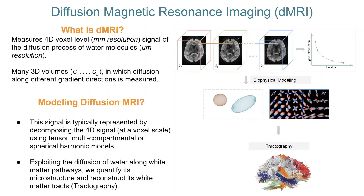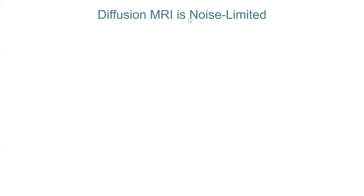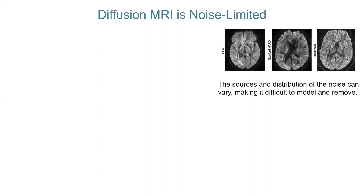Using the information derived from these models fitted to the data, one derives white matter information to reconstruct tracts, commonly known as tractography. Diffusion MRI is typically limited by noise. Noise originating from a variety of sources and types often corrupts the diffusion MR signal. One of the main sources of noise in the diffusion MR signal is thermal noise, and the effect of this noise becomes more prominent with an increase in the B value.